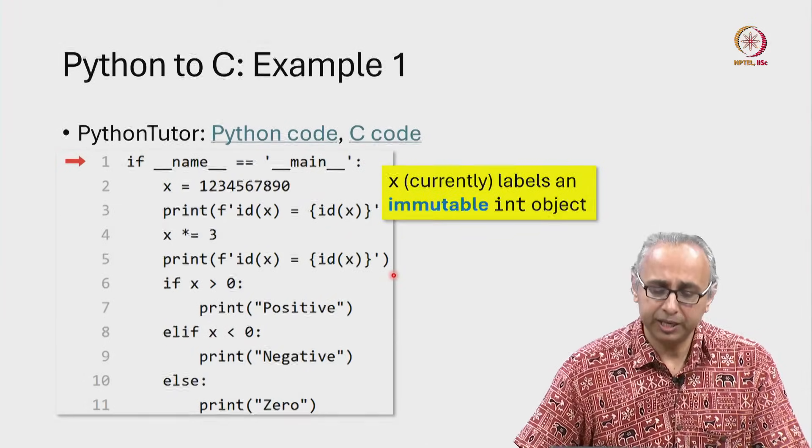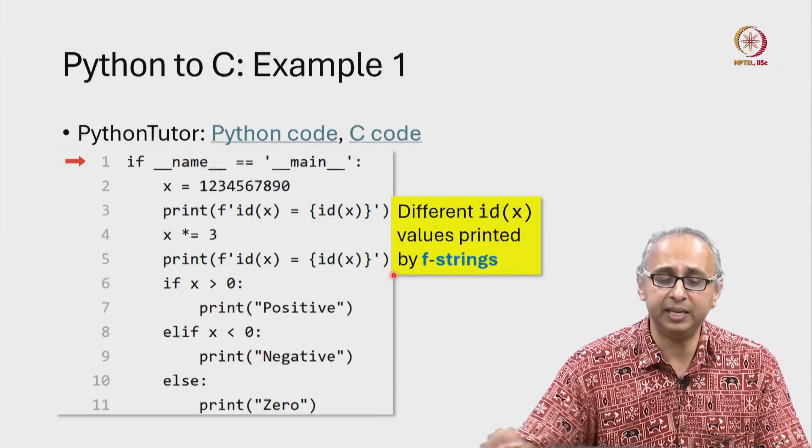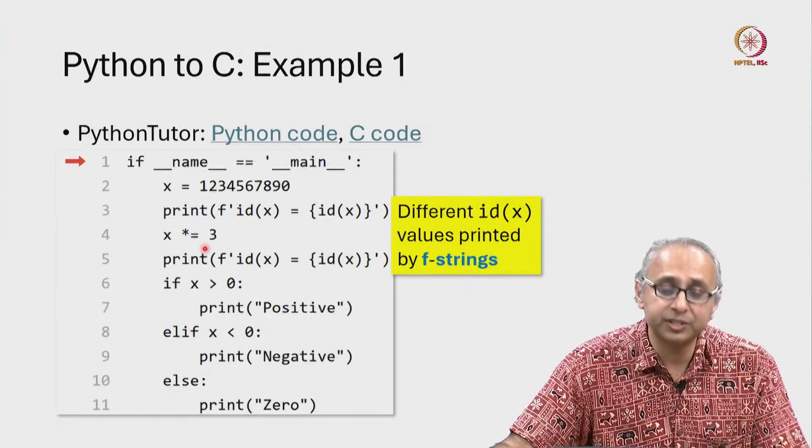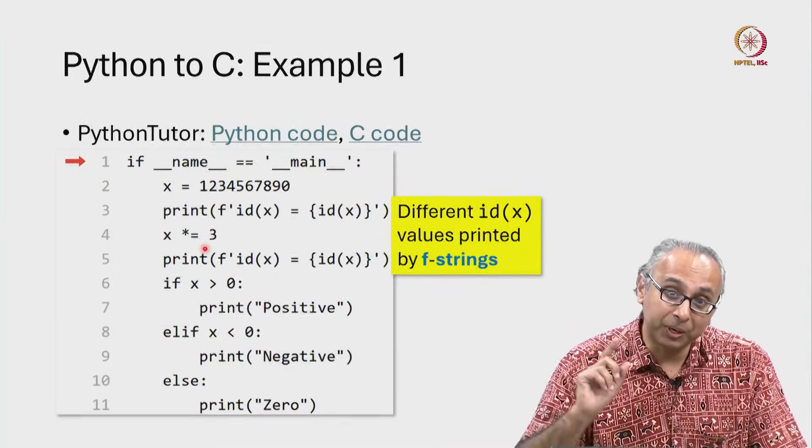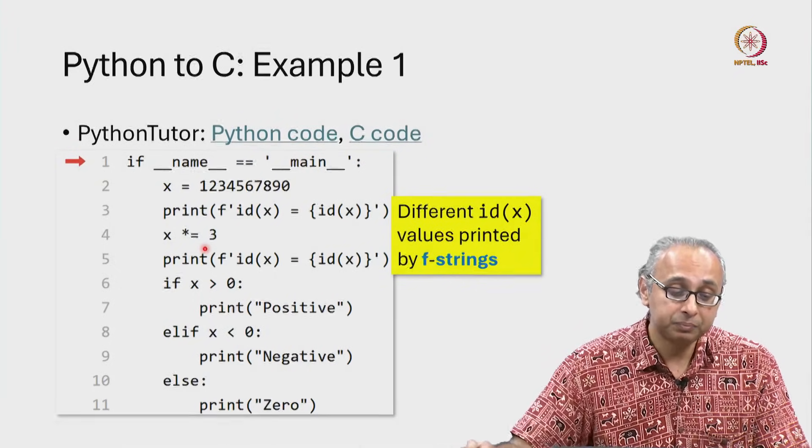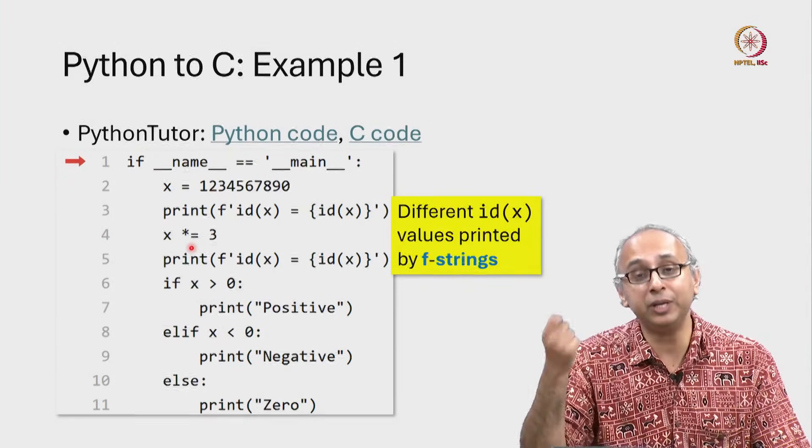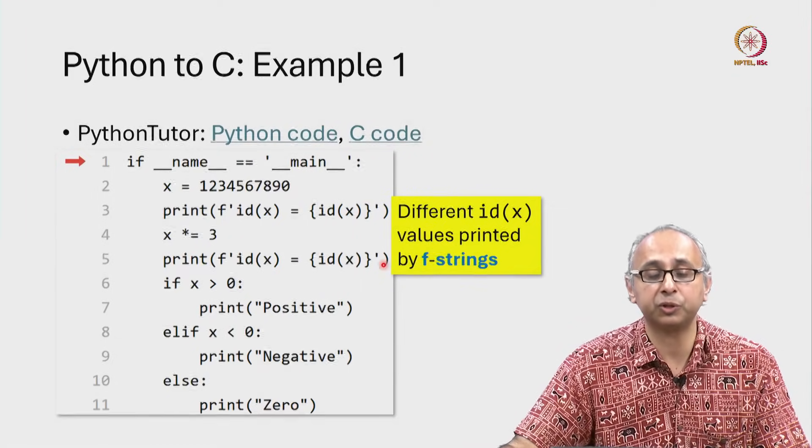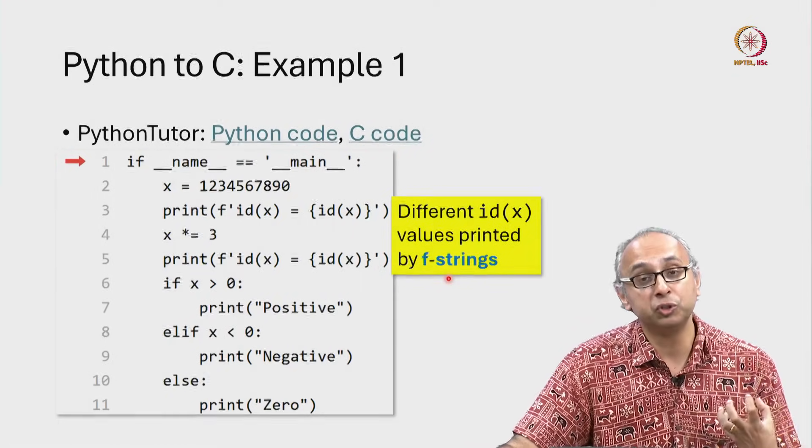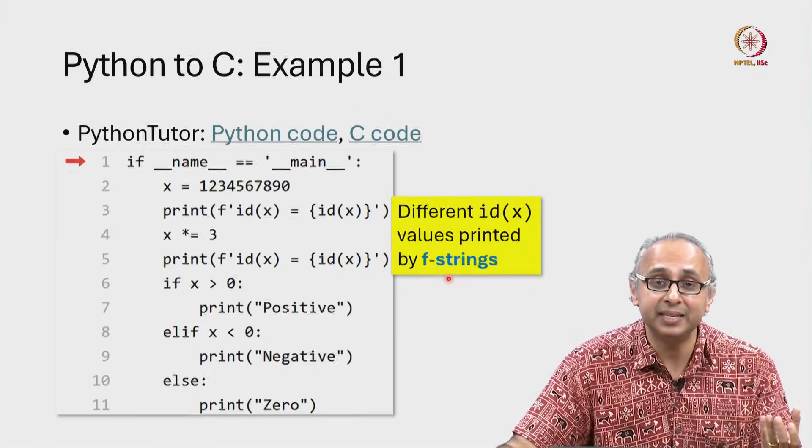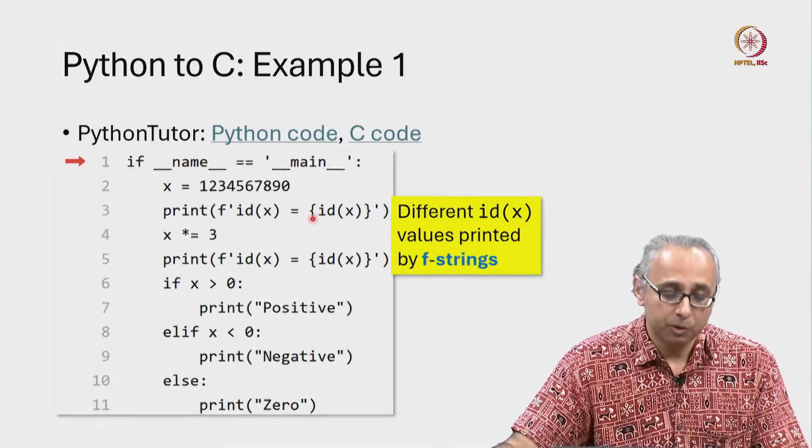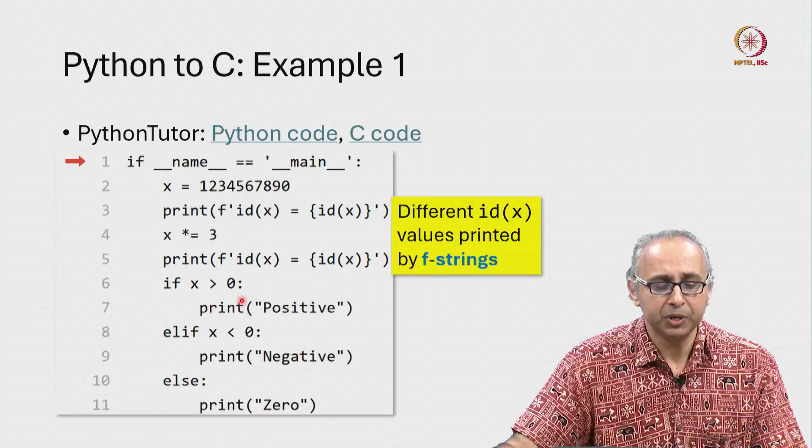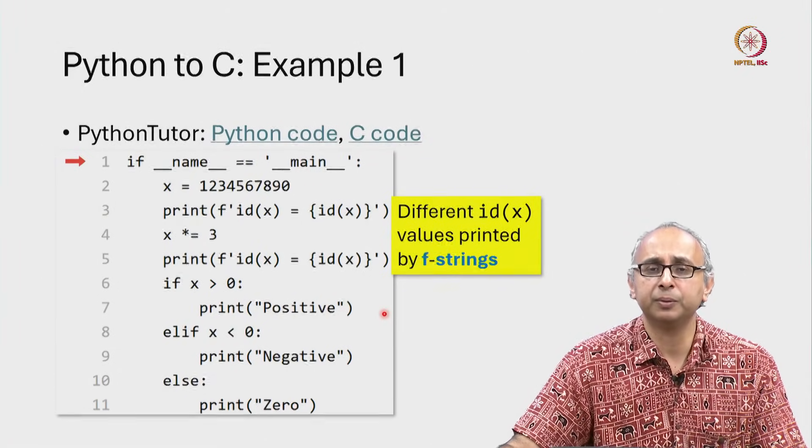Then what's happening over here is we're going to print the id of x, and because in between these two print statements we have this x reassignment to x, and because integer objects are immutable, we know that this x is going to be reattached to a different integer object. And that is why these two numbers that are going to be printed as f strings are going to be different because their ids are going to be different. Since x was a positive integer, 3 times x is of course going to be a positive integer. So we would come into this if condition and we would print positive.